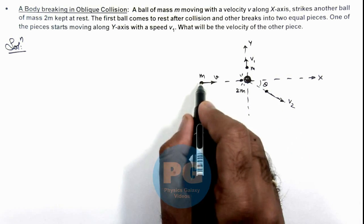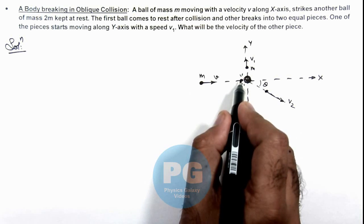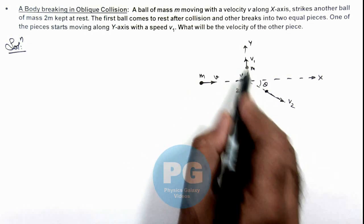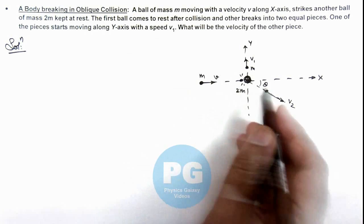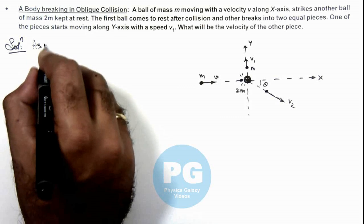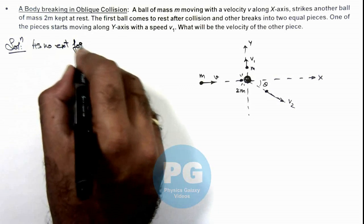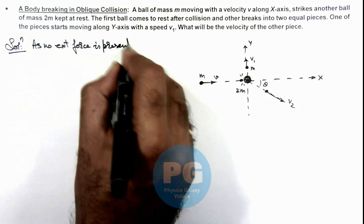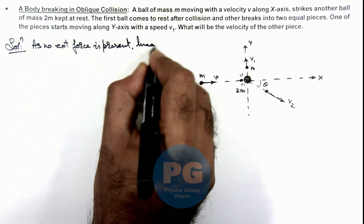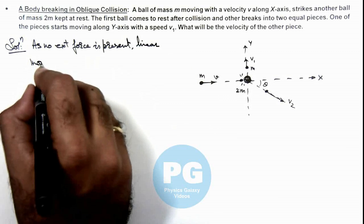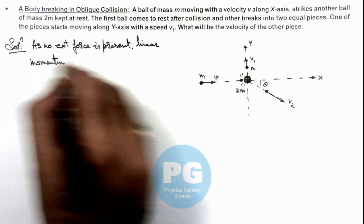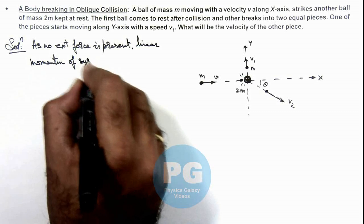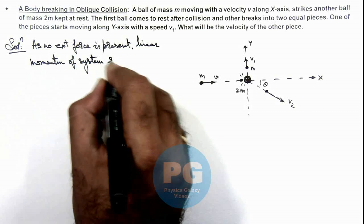So here as the first ball comes to rest and the other two pieces are moving in this direction, we can write as: no external force is present, linear momentum of system remains conserved.